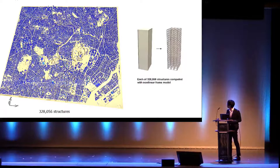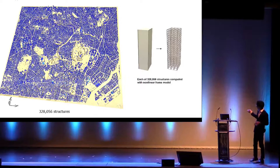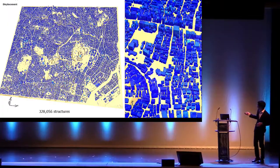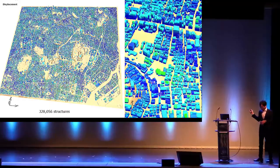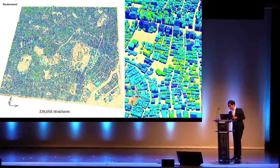We have geographic information data of these structures and we can convert this into nonlinear frame models. We can convert this for 300,000 structures in this area, and compute the response of each building according to the ground motion we have computed for each site in this domain.